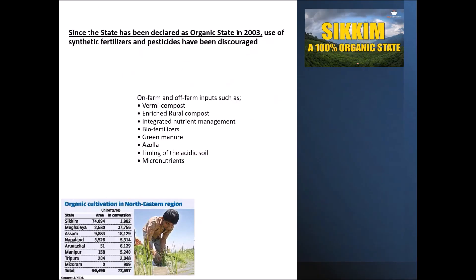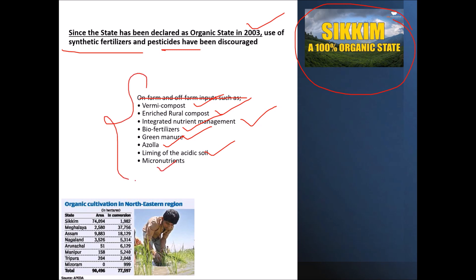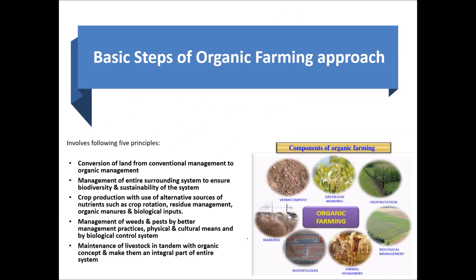Talking about India — Sikkim is a 100% organic state, declared so in 2003, because the use of synthetic fertilizers and pesticides has been discouraged. On-farm inputs include vermicomposting, enriched rural compost, integrated nutrient management practices, bio-fertilizers, green manure, azolla, liming of acidic soils, and micronutrients. Among all the seven sister states, Sikkim accounts for most of the area organically cultivated.